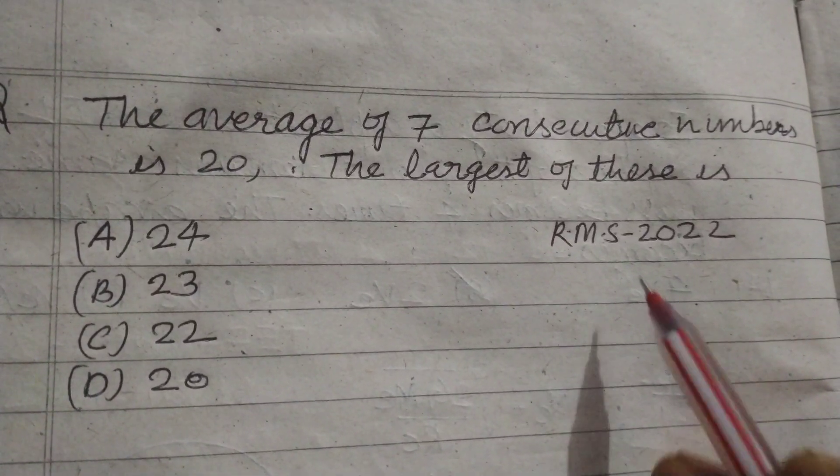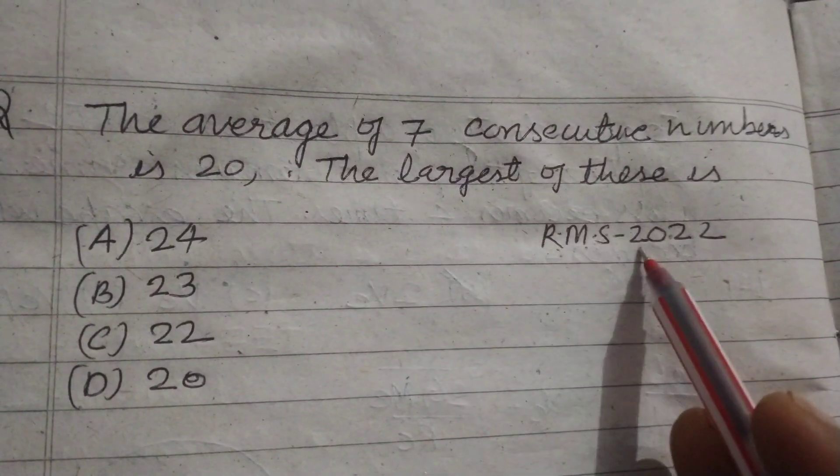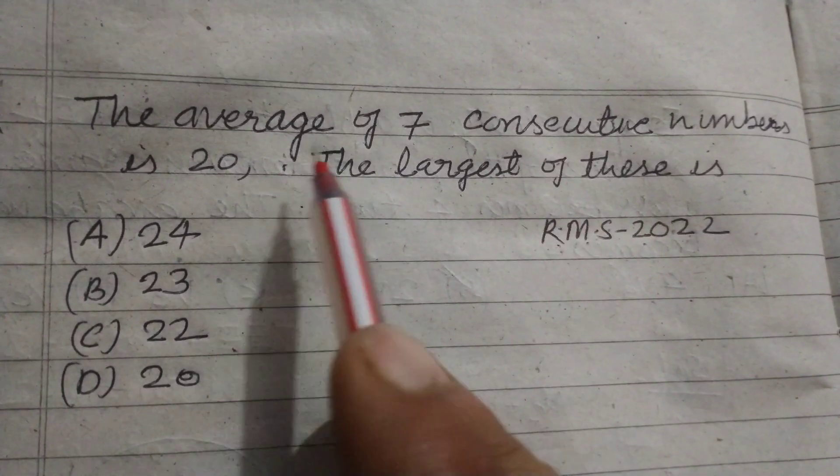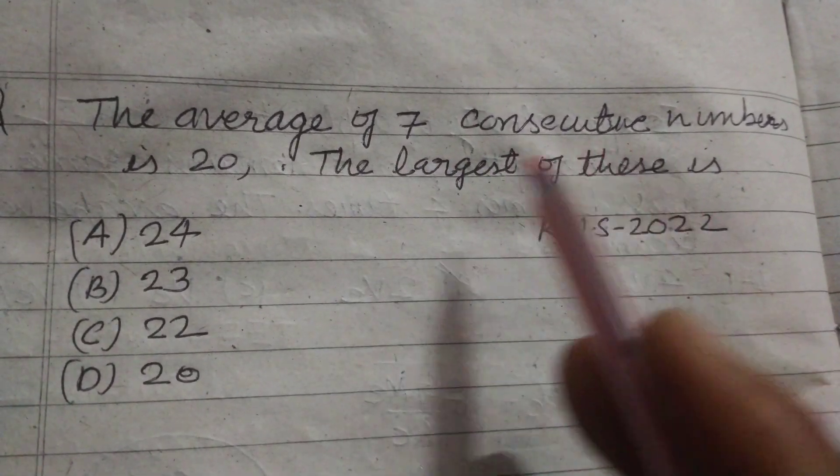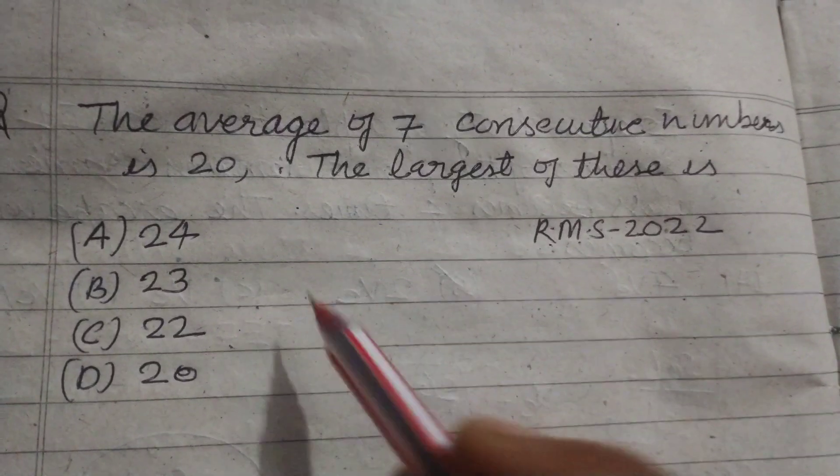Hello students and warm welcome to this YouTube channel. Rasti Military School 2022 question: the average of 7 consecutive numbers is 20. Find the largest of these.